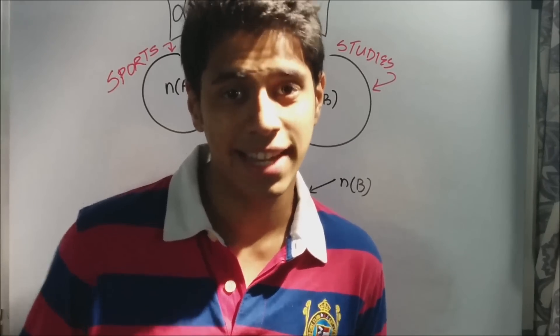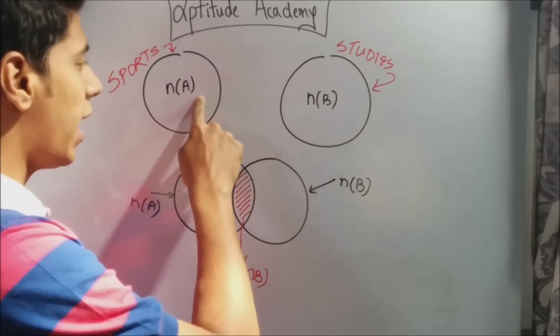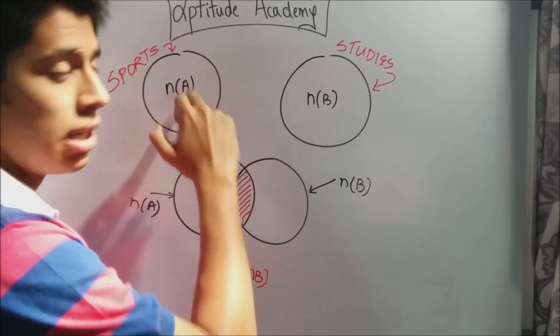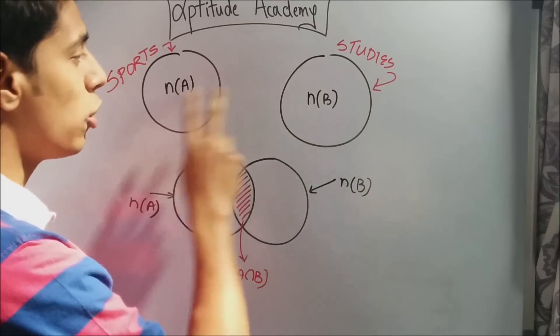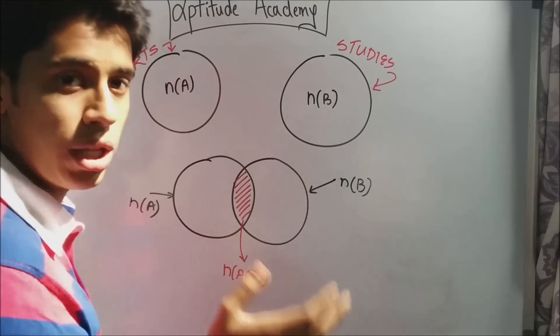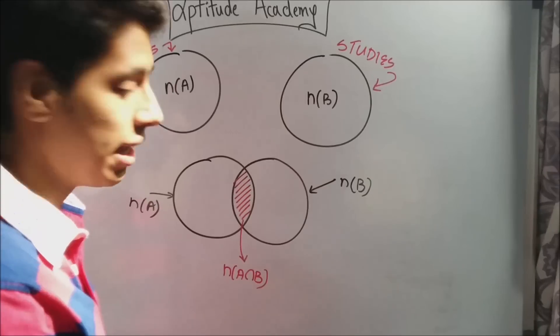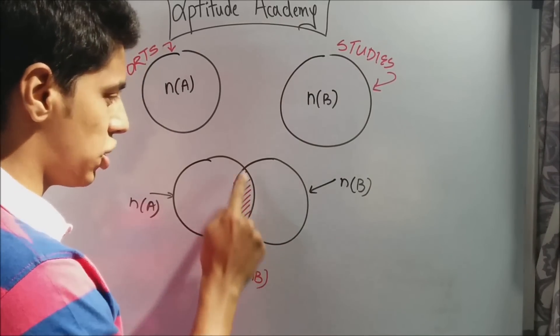Alright, now to understand the basics of Venn Diagrams, let's take an example. Let us say n(A) are the kids that play sports, and let's say n(B) are the kids that study. Now, we've got two groups of kids. However, in a school, you will have some kids that play as well as study. They come in this overlapping section.